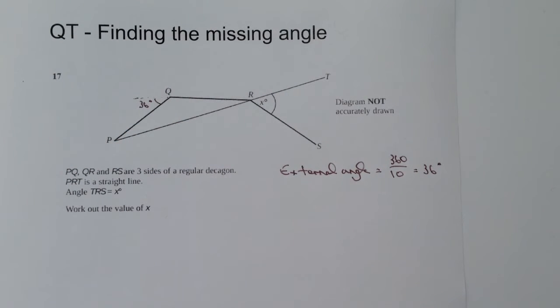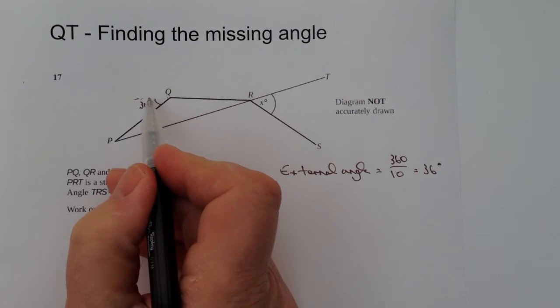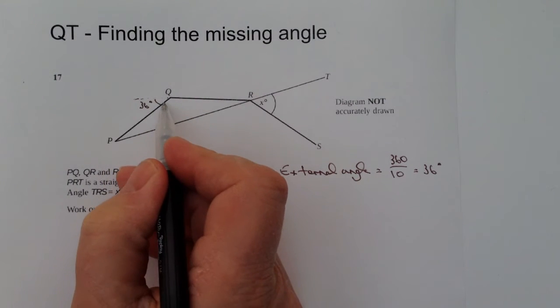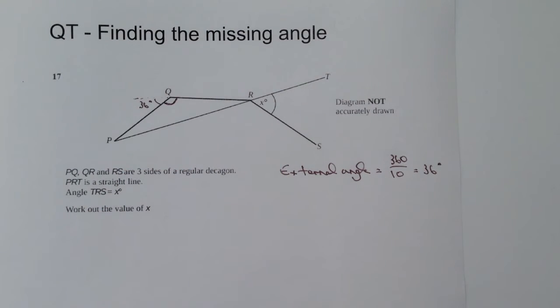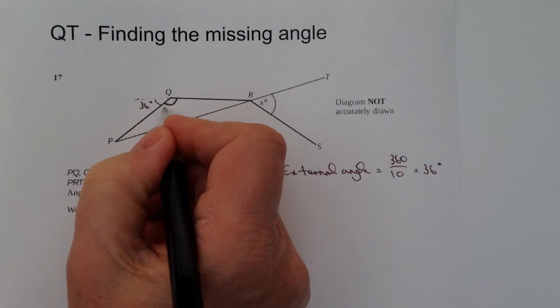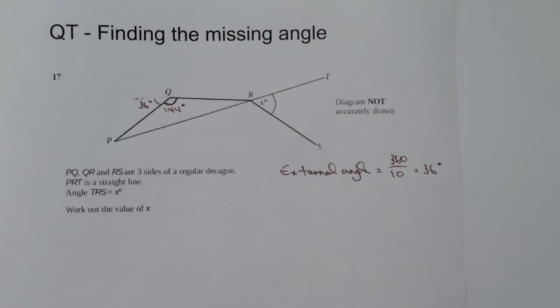Which also means then I can work out the internal angle because this is going to be a straight line along here. So therefore, the internal angle here is going to be 180 take away 36. So that's going to give me an internal angle of 144 degrees.